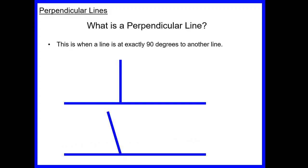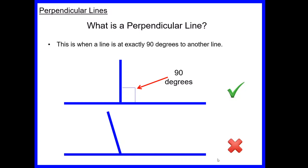The second type of line we need to know about is perpendicular lines. Perpendicular lines are at exactly 90 degrees to another line. In the top example the lines meet at 90 degrees, shown by the 90-degree symbol. The bottom example does not make 90 degrees, so those lines are not perpendicular.